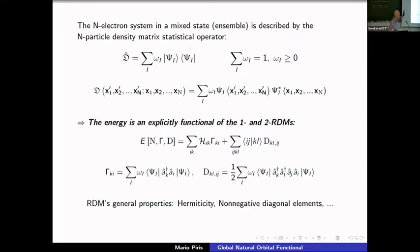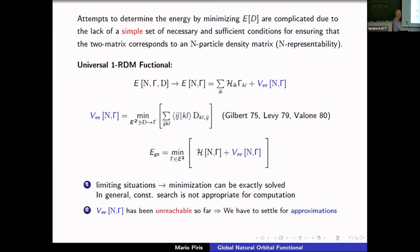The density matrix operator is given by this equation, where ω is normalized so its weights sum to one. This is a statistical average over pure states. The energy for these systems is exact and is a functional of the one-particle and two-particle density matrices, which are given by this equation.